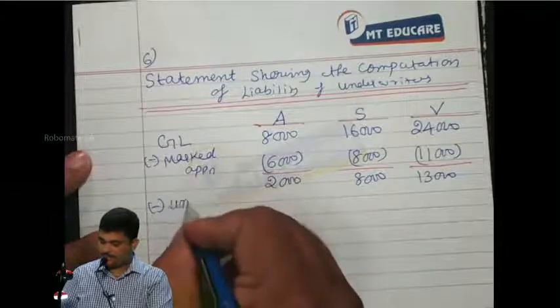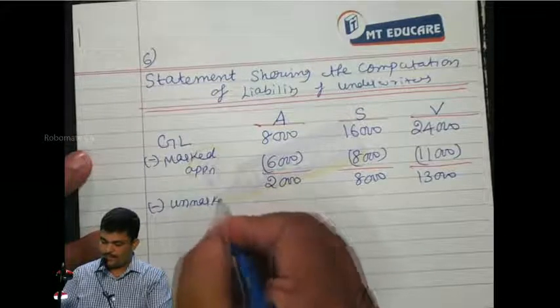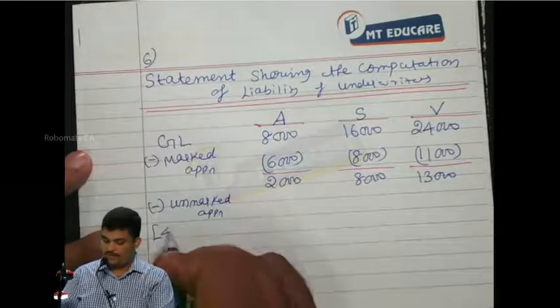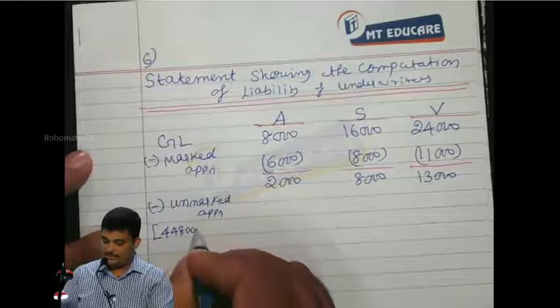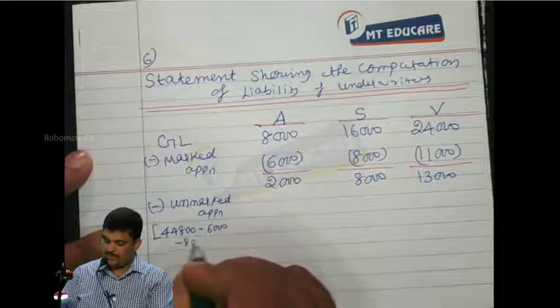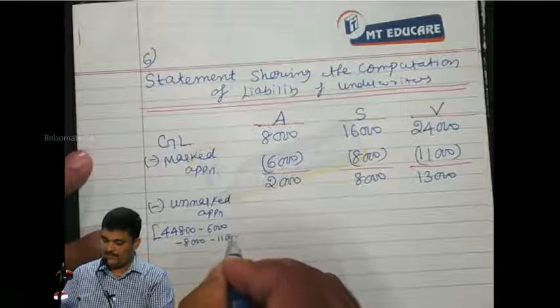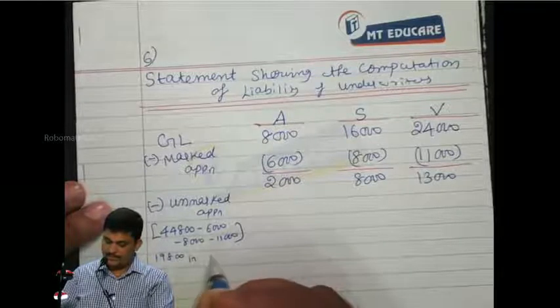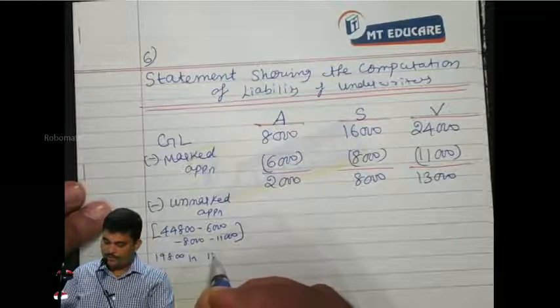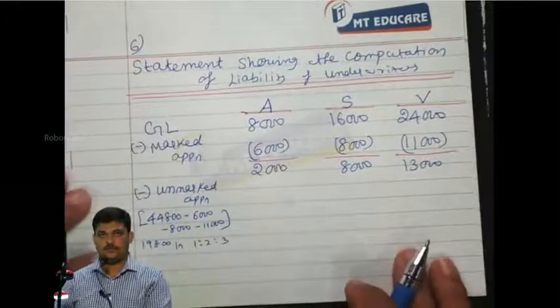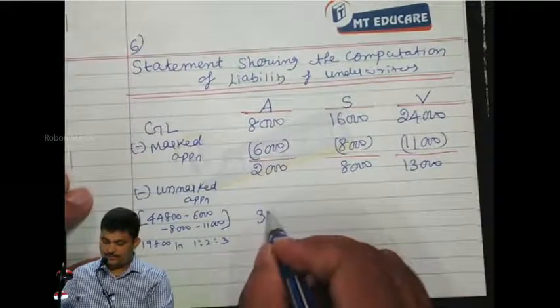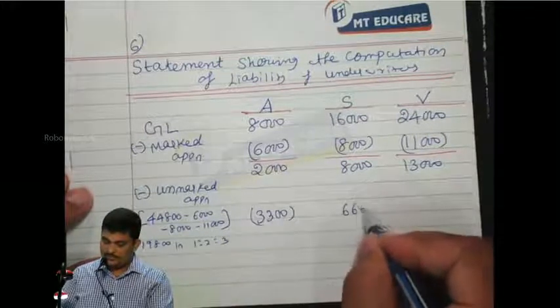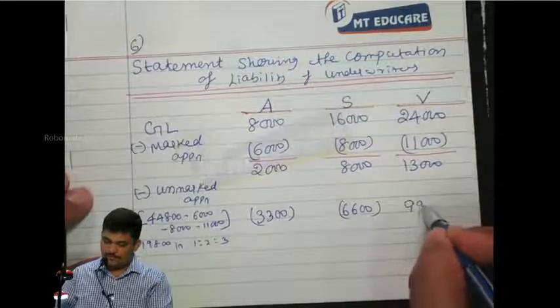Minus unmarked applications will be total 44,800 minus 6,000, minus 8,000, minus 11,000 equals 19,000. In ratio 1:2:3, let me show: 3,000, 6,000, 9,000.